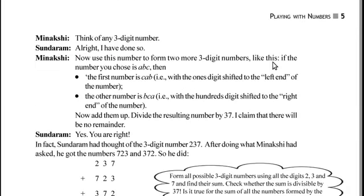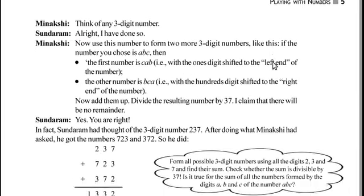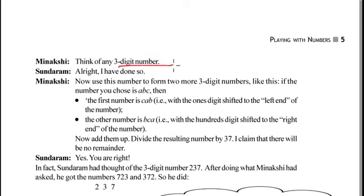Now let us see what it means. Think of any three digit number. Let me think 4 1 3. Alright, I have done so. Now use this number to form two more three digit numbers using these three digits.